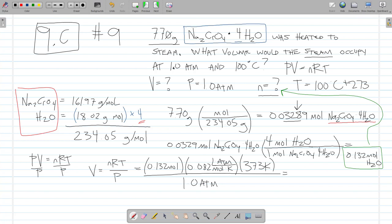After we plug these in here, 0.132 times 0.0821 times 373 divided by 1 equals 4.04 liters. And moles cancel, K and K, atmosphere and atmosphere. My units are liters.